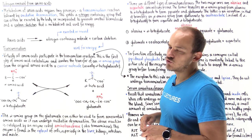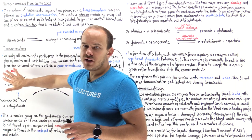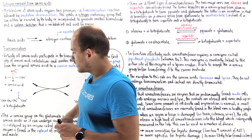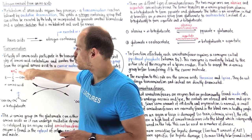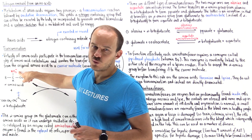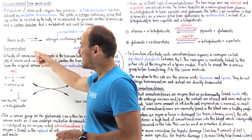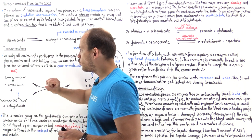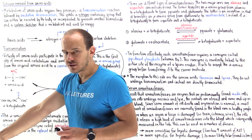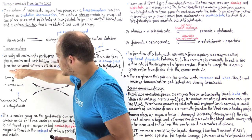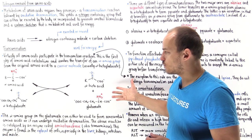So let's focus on this transamination step. Here we have an alpha amino acid that we want to metabolize, and here we have a carrier molecule that will accept this red nitrogen-containing group. In the transamination step, transamination means we transfer this amino group onto a different molecule. When we transfer this amino group onto a carrier molecule, we form our products.